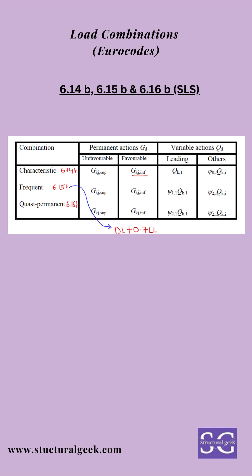The last set of combinations are the SLS combinations, checked for serviceability requirements: 614b, 615b, and 616b. The 614b is for characteristic serviceability requirements, with all load factors taken as 1. The 615b is the frequent load combination, with factors such as dead load plus 0.7 times live load. Similarly, 616b is the quasi-permanent combination. Deflection, crack width, and other serviceability requirements for members need to be checked for these load combinations.